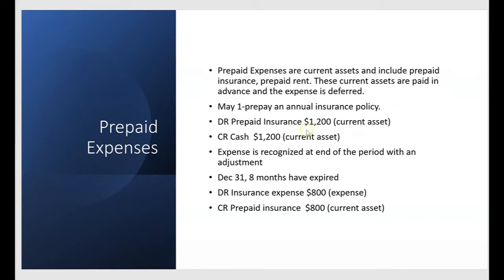Debit prepaid insurance, credit cash, $1,200. Notice they're both current assets. There's no expense recognition yet because this prepaid insurance account represents a 12-month policy. We're going to pay it in cash, but we're not going to recognize any expense on May 1st — we're going to defer the expense. The expense will be recognized at the end of the period with an adjustment.